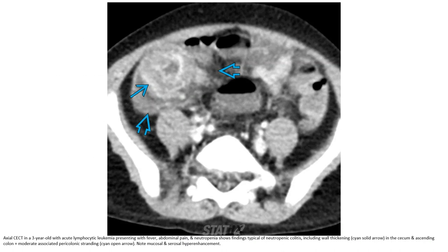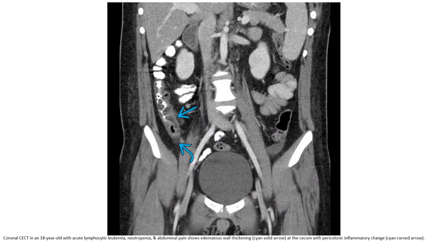Note mucosal and serosal hyperenhancement. Contrast-enhanced CT in an 18-year-old with acute lymphocytic leukemia, neutropenia, and abdominal pain, showing edematous wall thickening of the cecum with pericolonic inflammatory changes.